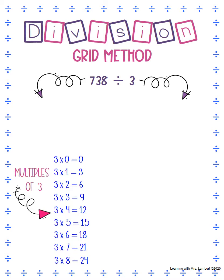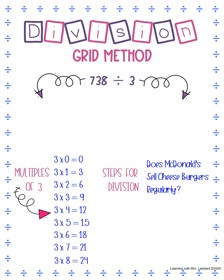The next thing we want to do is write down our steps. When you're doing this you don't have to write all of this out, but we're gonna write it all out so you have it. Our steps for division are gonna be the same steps you would use for long division, except one minor piece that I'll show you is a little different. We're gonna use 'Does McDonald's Sell Cheeseburgers Regularly,' which you can use for long division as well.